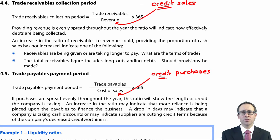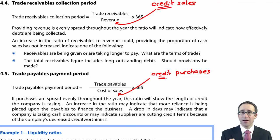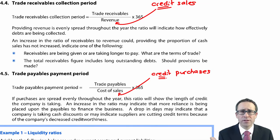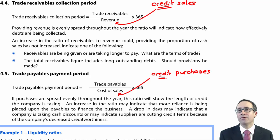However, a longer payable period increases risk — it could indicate liquidity issues and risks losing your suppliers' goodwill. If your days have gone down, that means you've paid suppliers more quickly, perhaps taking advantage of prompt payment discounts. This can slightly increase profitability because discounts received are a credit balance in profit or loss.